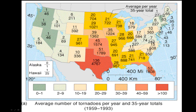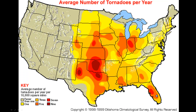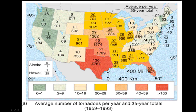If instead of this choropleth map that's aggregated by state, we look at an isopleth map, it makes zones of numbers rather than aggregating by state level. Here, for example, there was one tornado per year in this zone, three in the orange area, and seven to nine in the red areas. This gives a very different picture — while Texas may have the most tornadoes, they're mostly straddled on the border between Texas and Oklahoma.